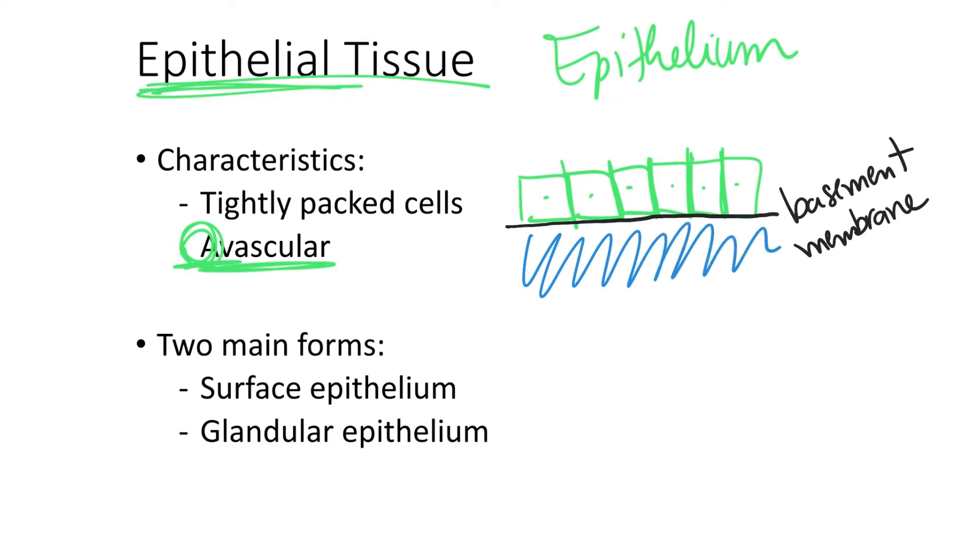The basement membrane is named basement because it is at the base of the epithelial tissue. The side of the epithelial tissue cell facing the basement membrane is called the basal surface. The side facing the opposite direction is called the apical surface. The sides facing laterally are named the lateral surface.